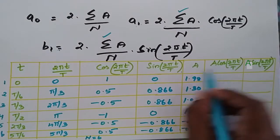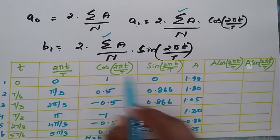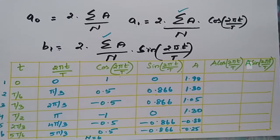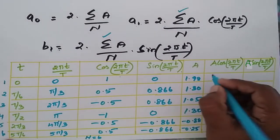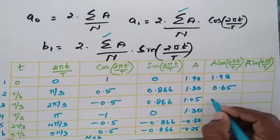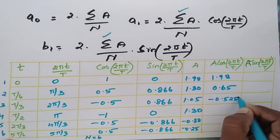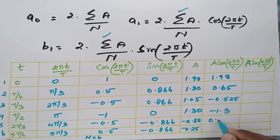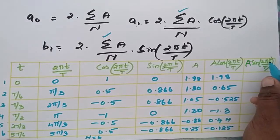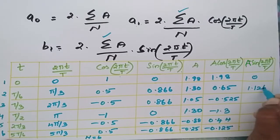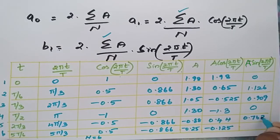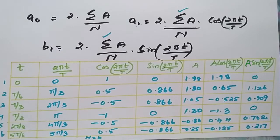Now computing the product columns: a·cos(2πt/T) gives values −0.866, −0.866, −0.866, −0.866, and a·sin(2πt/T) gives values −0.9, 0.65, −0.525, −1.3, 0.44, −0.125. The column a·sin(2πt/T) further gives −0.1126, 0.909, 0.762, 0.217.